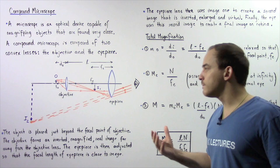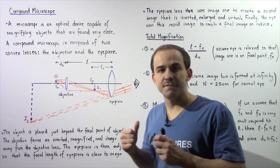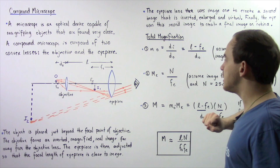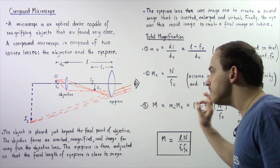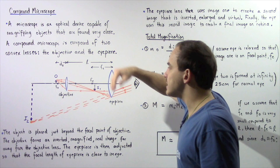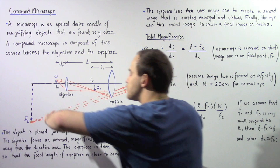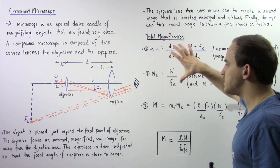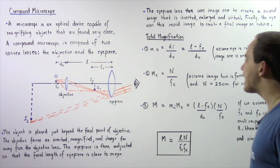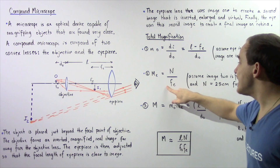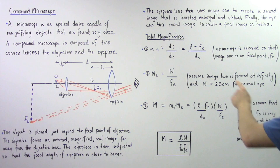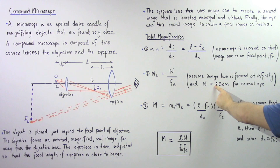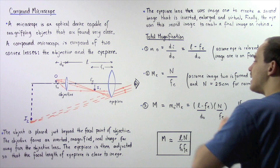In step two, we calculate the magnification for the eyepiece lens. The eyepiece acts as a simple magnifier, so its magnification M_e equals N divided by Fe. This equation comes from our lecture on magnifying glasses and simple magnifiers. N is the near point of the eye — assumed to be 25 centimeters for the normal eye — and Fe is the focal length of the eyepiece. We assume image two is formed at infinity.